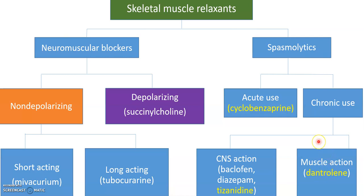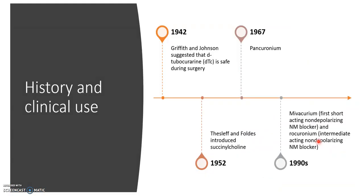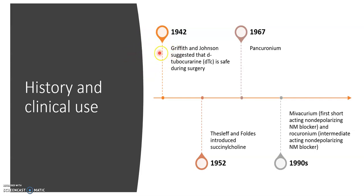In terms of history and clinical use, in 1942 Griffith and Johnson suggested that d-tubocurarine is safe during surgery. There is a longer history before that, but to be concise we start from the 1940s. In 1952, succinylcholine was introduced, and in 1967 we have pancuronium.